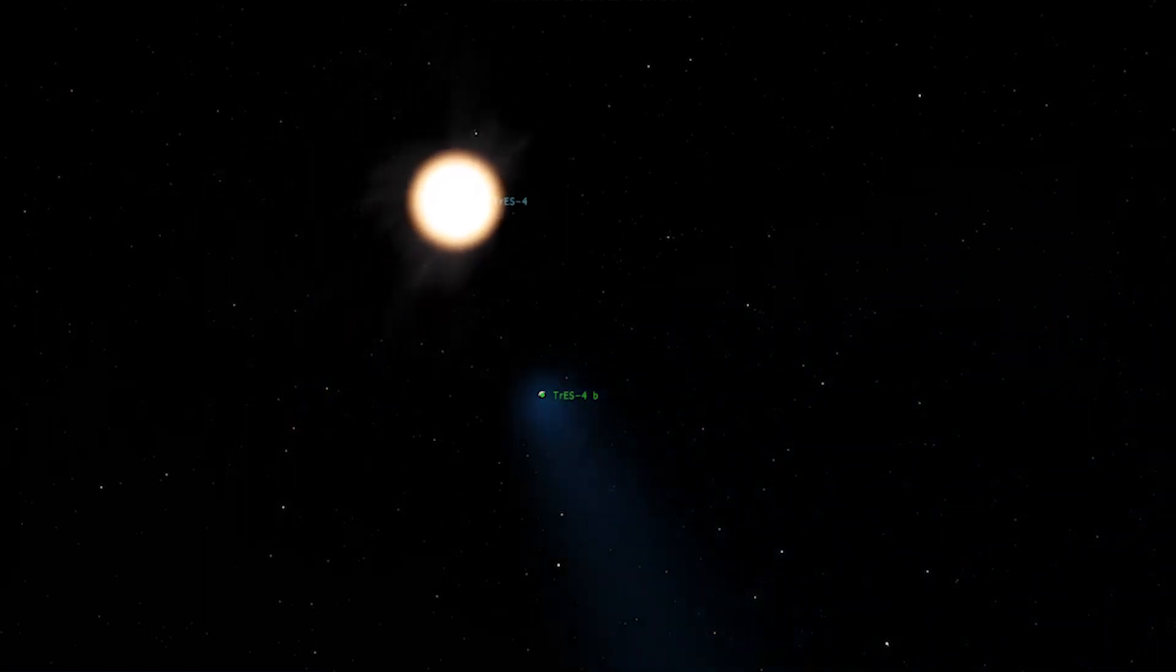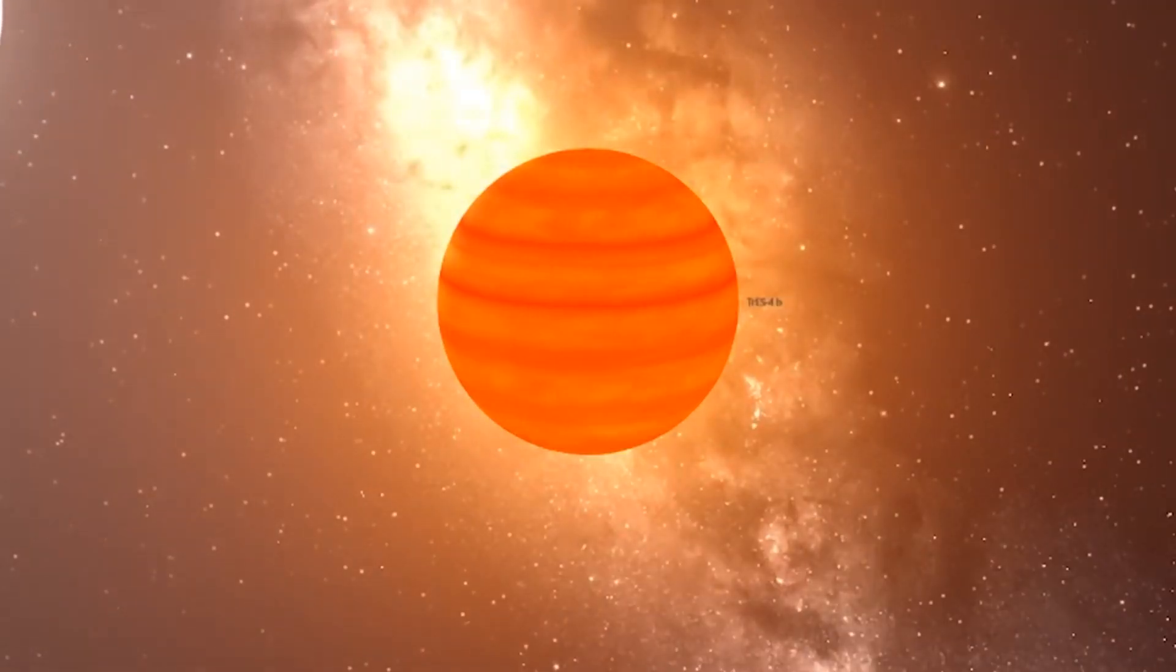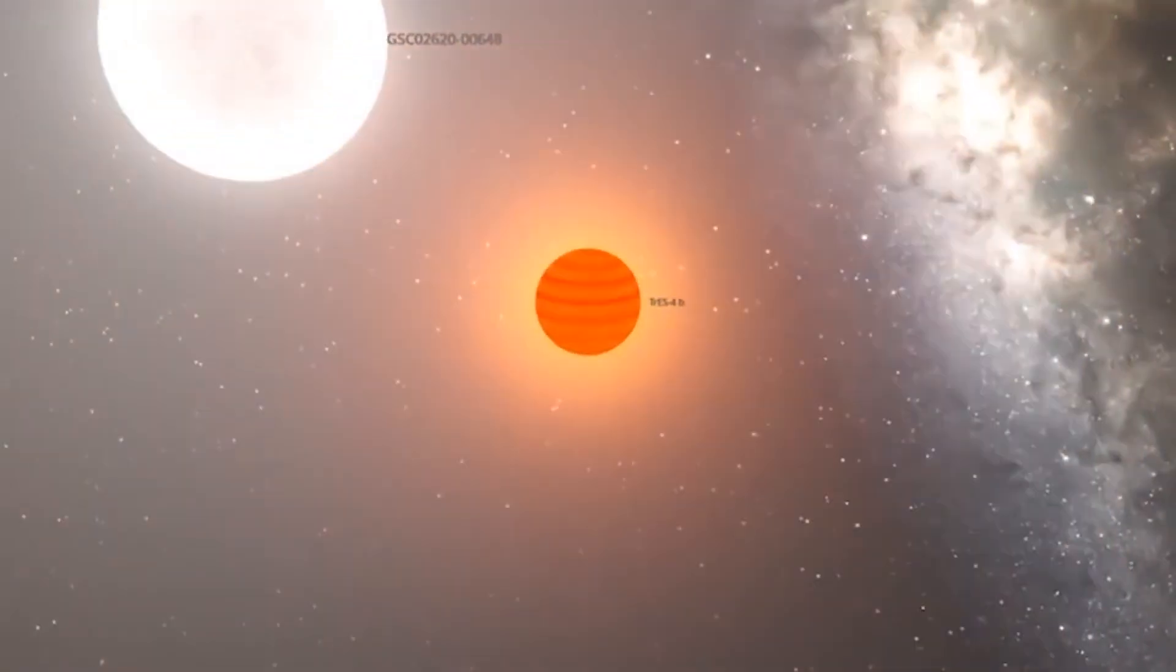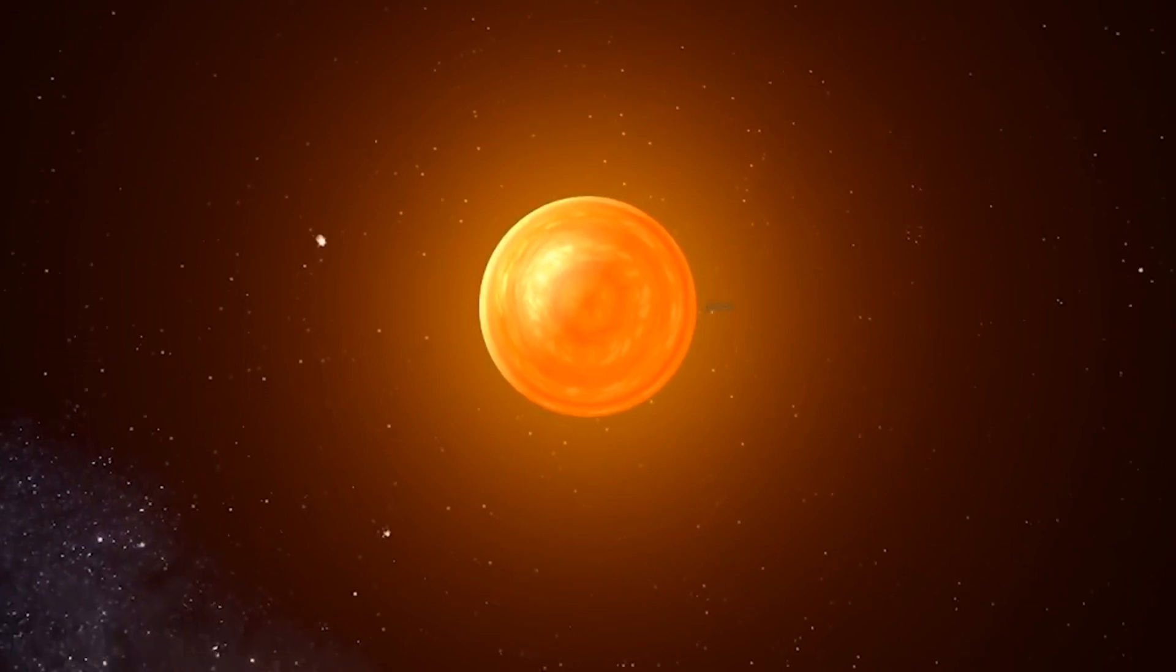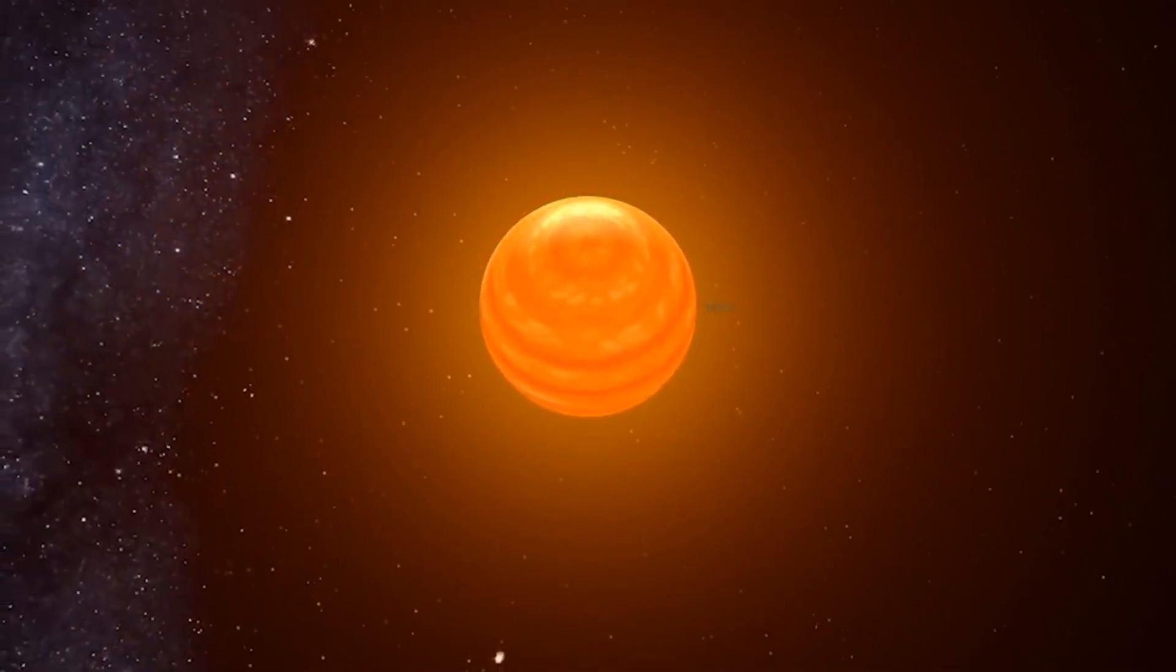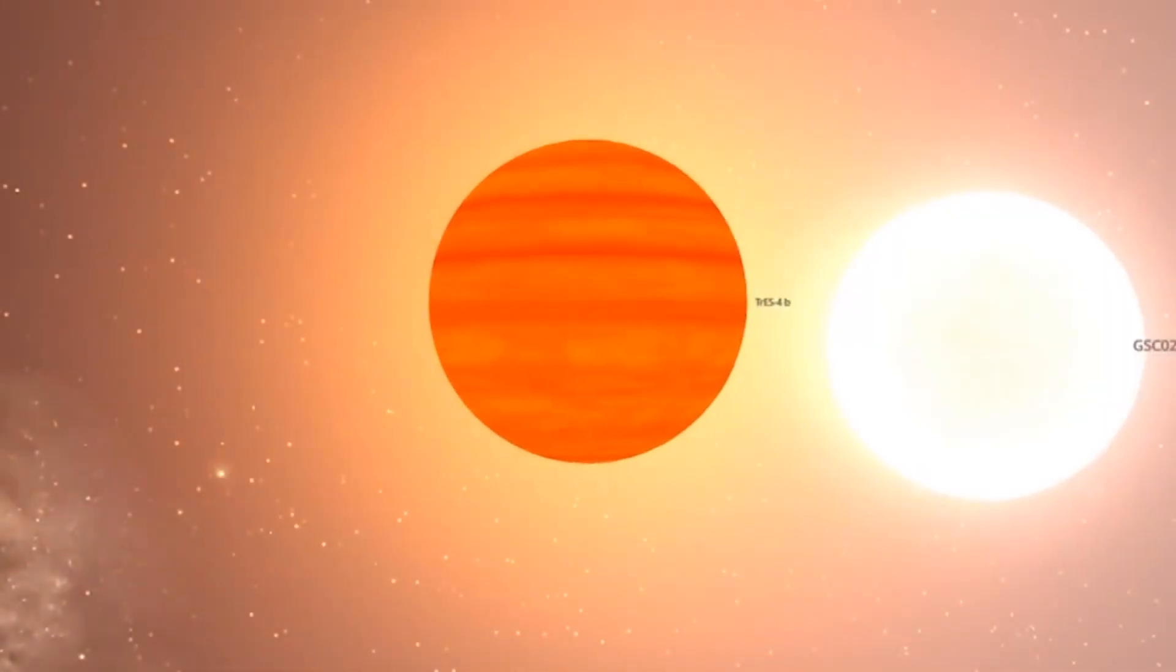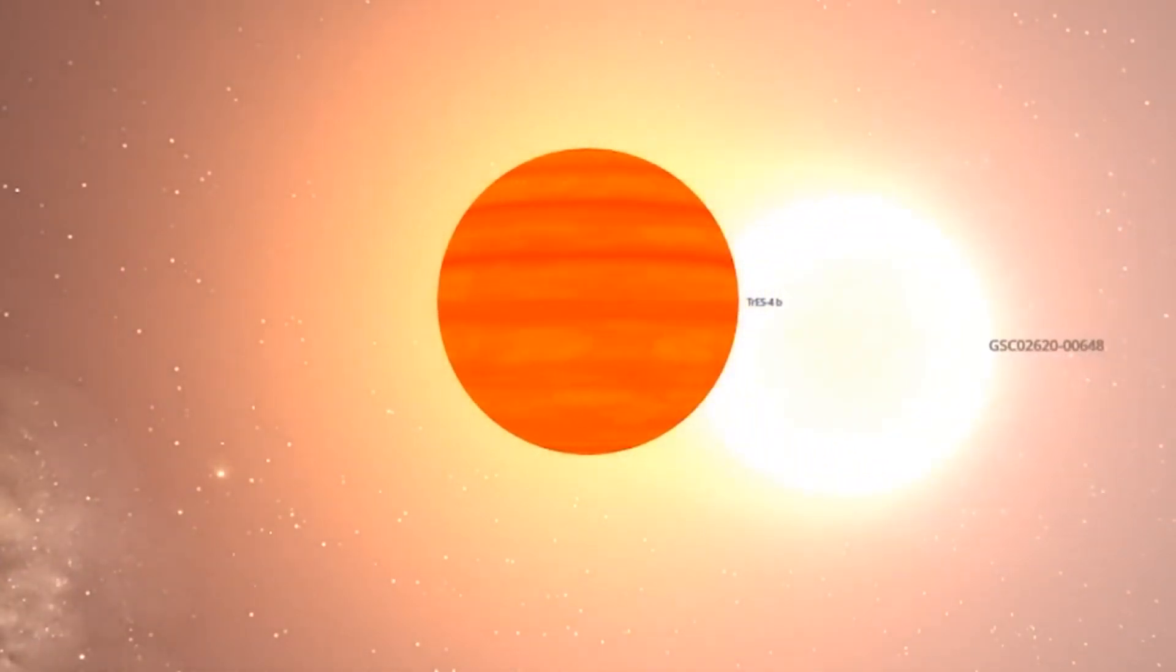The planet completes a full orbit in just 3.5 days and this gas ball is very hot. Its temperature exceeds 1700 degrees. Hot gas tends to expand, so this planet is porous. Its density is very low on average, as in styrofoam or balsa wood.